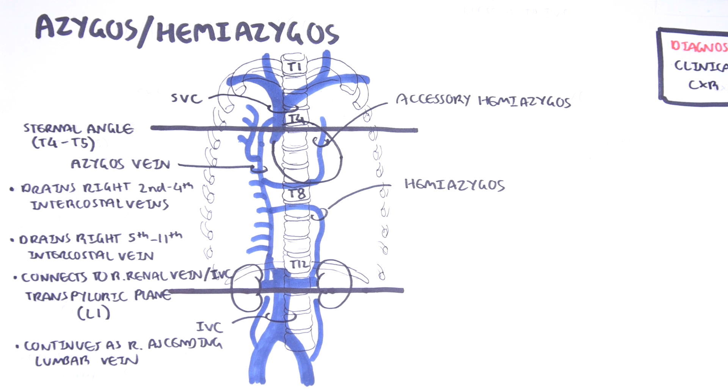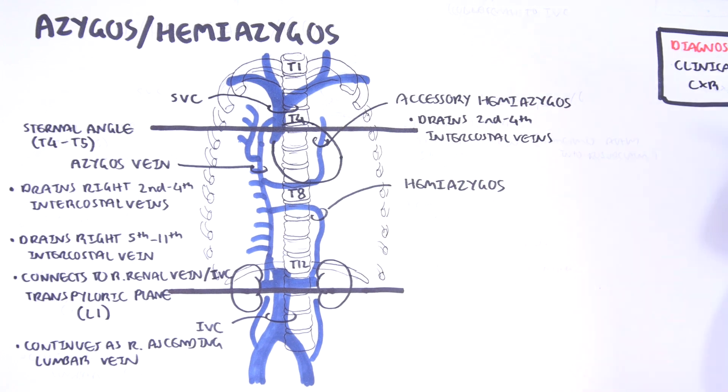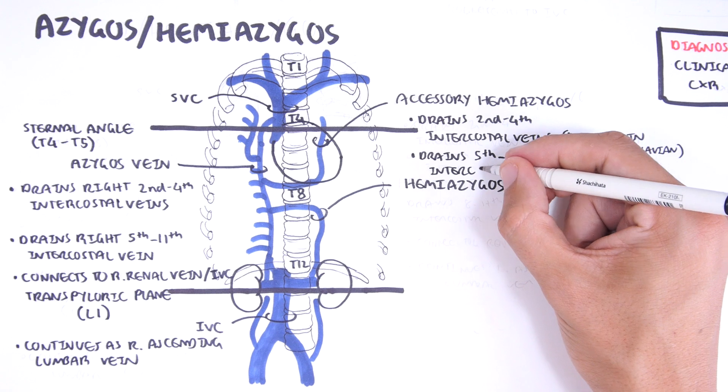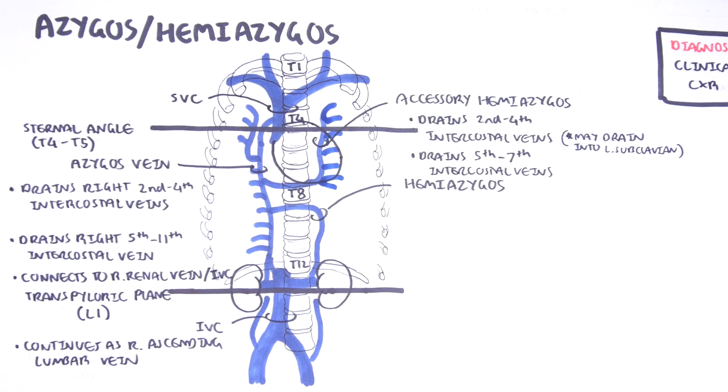The accessory hemiazygos vein has more variations than the azygos and hemiazygos veins. Usually it drains the 2nd to 7th intercostal veins. The accessory hemiazygos vein joins and drains into the azygos vein at about the T8 vertebral level.